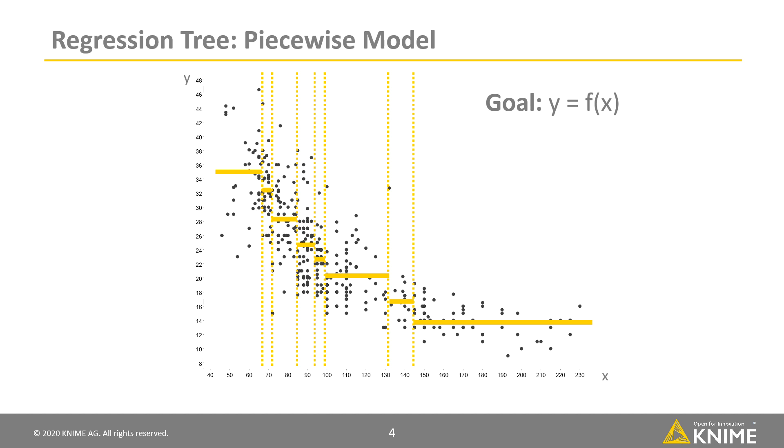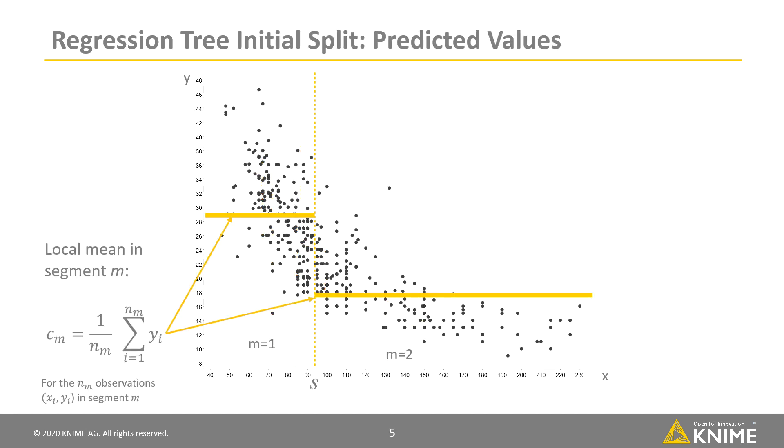Now, we shall see how a regression tree model can be constructed. In the first step, we want to split the training set into two subsets. Therefore, we want to find the threshold s that best splits the input feature x into two segments.